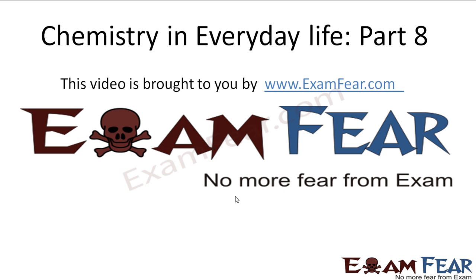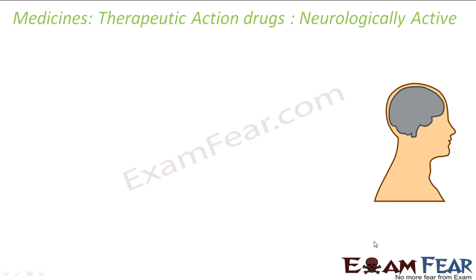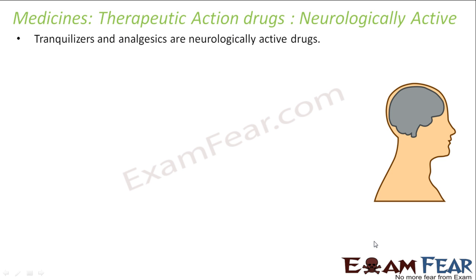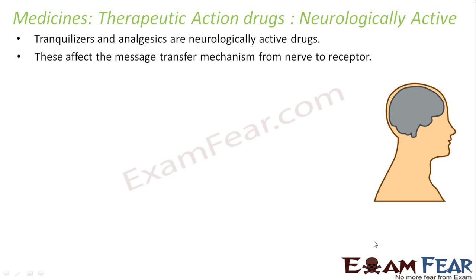Hello friends. This video on chemistry in everyday life part 8 is brought to you by examphia.com. Now let's talk about the neurologically active drugs. There are two types of neurologically active drugs: tranquilizers and analgesics. They are both neurologically active drugs and they affect the message transfer mechanism from the nerve to the receptors.